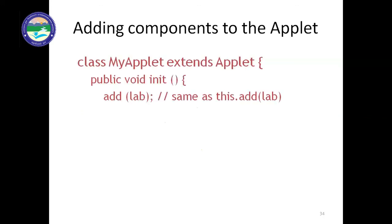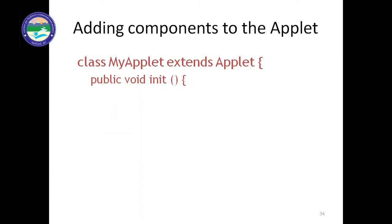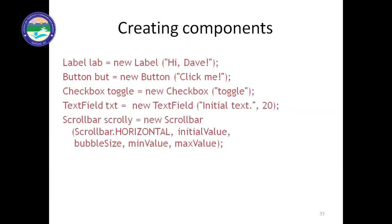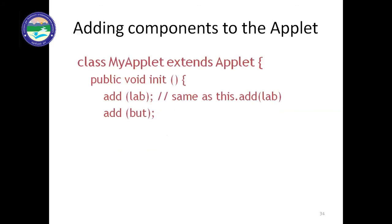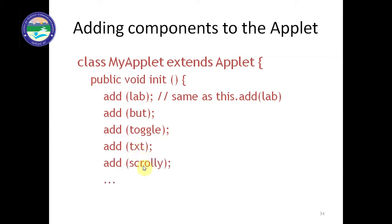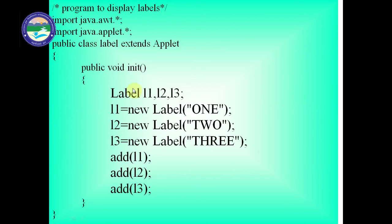Now we will use these components to design a program. The program is called MyApplet and it extends Applet. Inside the init() method, which acts like a constructor, we add the components: add(lab), add(button), add(toggle) for checkbox, add(txt) for textfield, and add(scrollbar). We add all components to the applet this way.